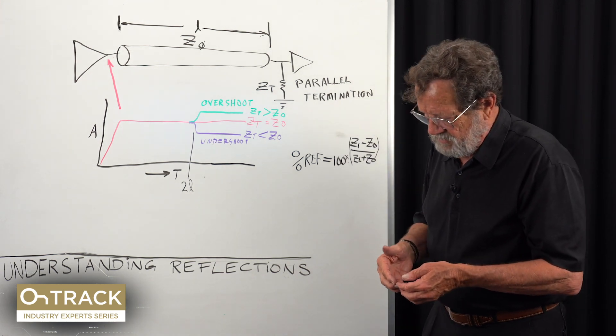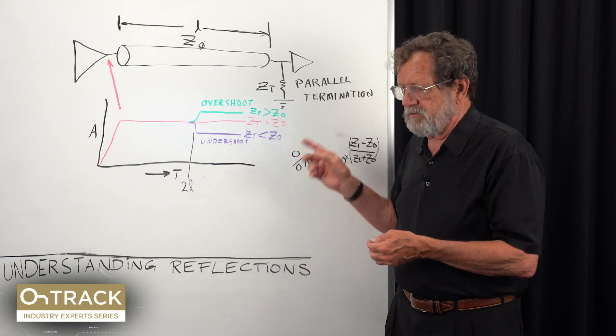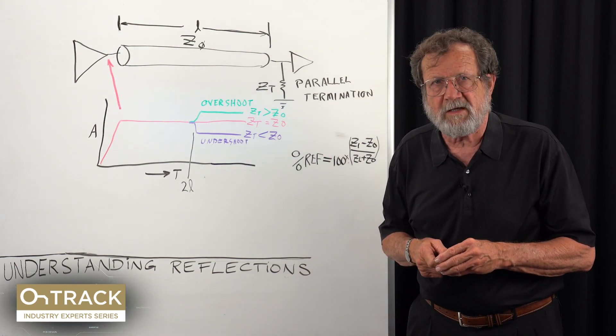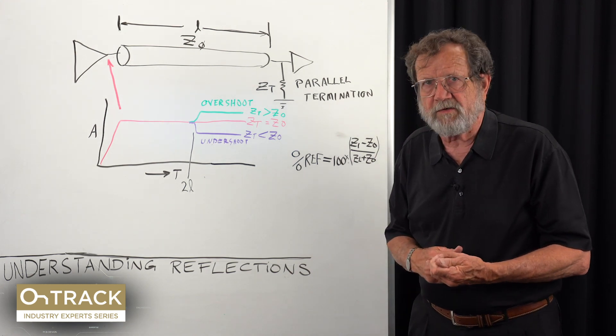RF engineers will work very hard to make sure that all the impedances are as close to 50 ohms as they can get. It's not so tough to do because most radios have one or two paths.